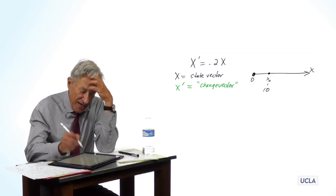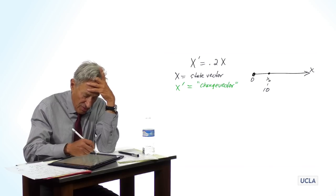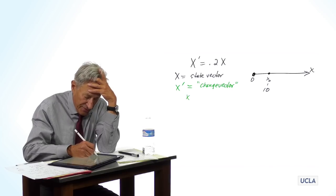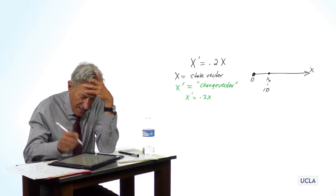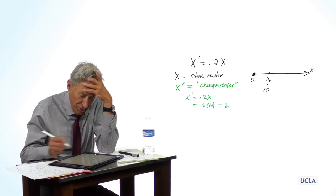Now, what is the change vector at the point x0 equals 10? Well, we just said, the change vector x prime is equal to 0.2 times x. x is equal to 10. So the change vector here is equal to 0.2 times 10 or 2.